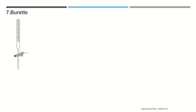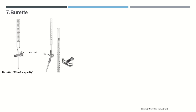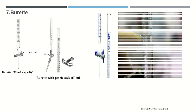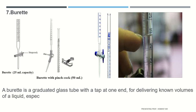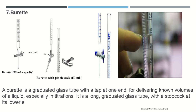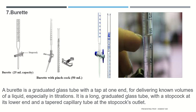Number seven is the burette. This is a 25 ml capacity burette. Burettes have a stop cock; this is a burette with a pinch cock. The capacity of the burette shown here is 50 ml. A burette is a graduated glass tube with a tap at one end for delivering known volumes of liquid, especially in titration. It is a long graduated glass tube with a stop cock at its lower end and a tapered capillary tube at the stop cock's outlet.